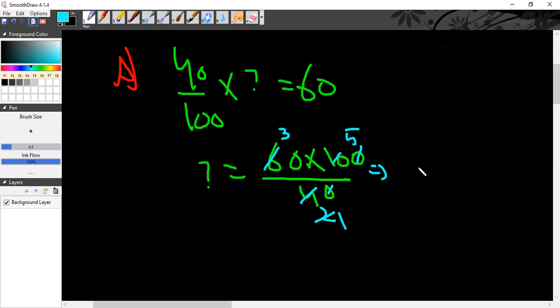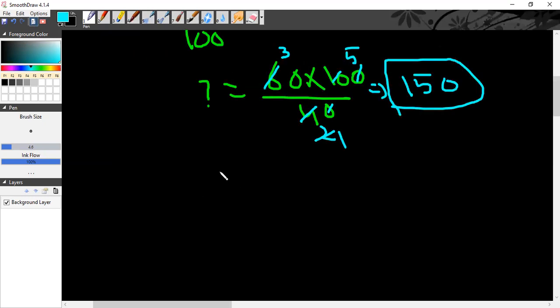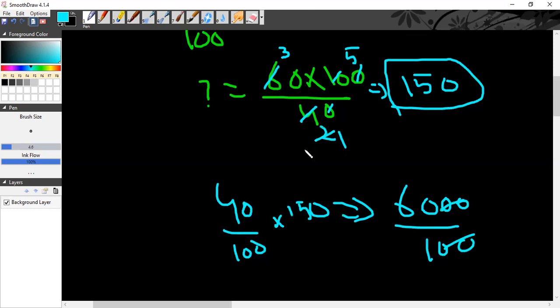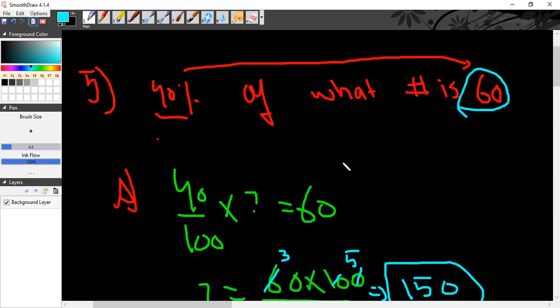So 30 multiply 5, which is 150. So 150 is the answer. For example, 40 percent of 150: 40 divided by 100, multiply 150... that's 6000 by 100, you get 60, which is exactly the number that we needed. Thank you.